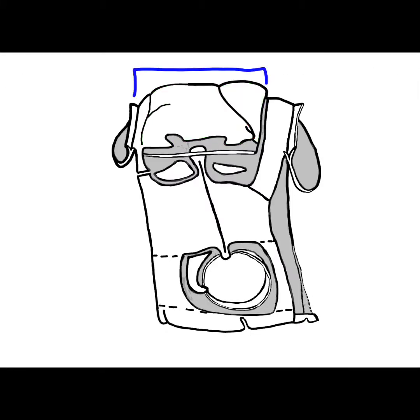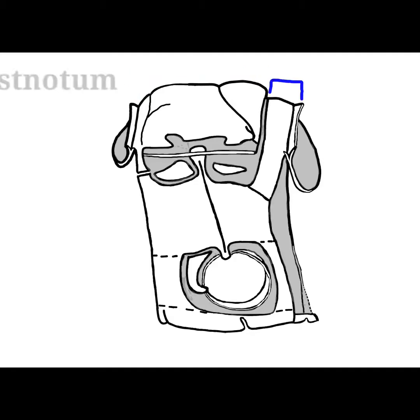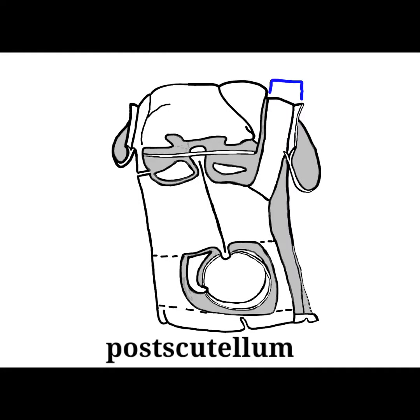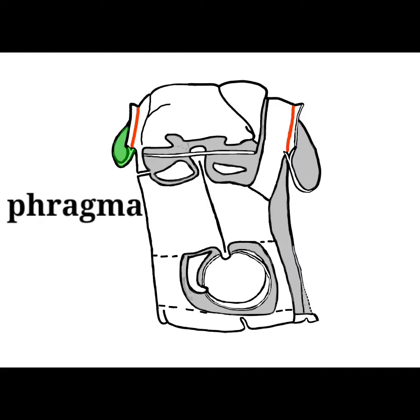The area from the acrotergite to the scutum is referred to as the alinotum, or the wing-bearing plate. The postnotum, or phragmanotum, is the phragma-bearing plate, also called the postscutellum. The phragma is a plate-like apodemal lobe of the anticosta that usually comes in a pair.